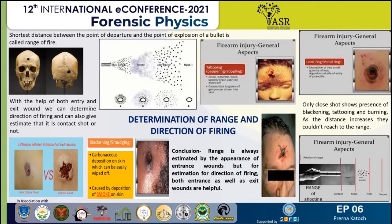Now, what about direction of firing? For direction of firing, we consider both the entrance as well as the exit wound. Let's take the case of a rifle firearm injury. In this case, the abrasion collar plays a major role. The abrasion collar is formed on the skin of the victim. If the direction of firing is straight, then it is made in the center and GSR is found around it.